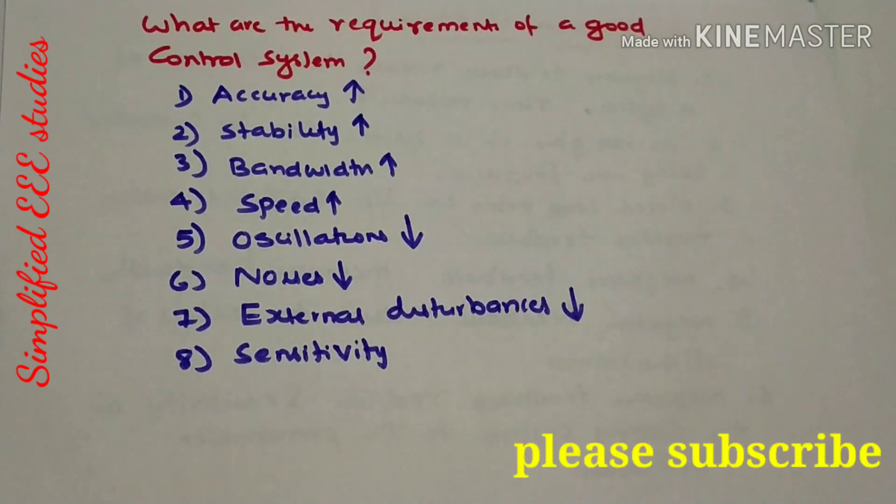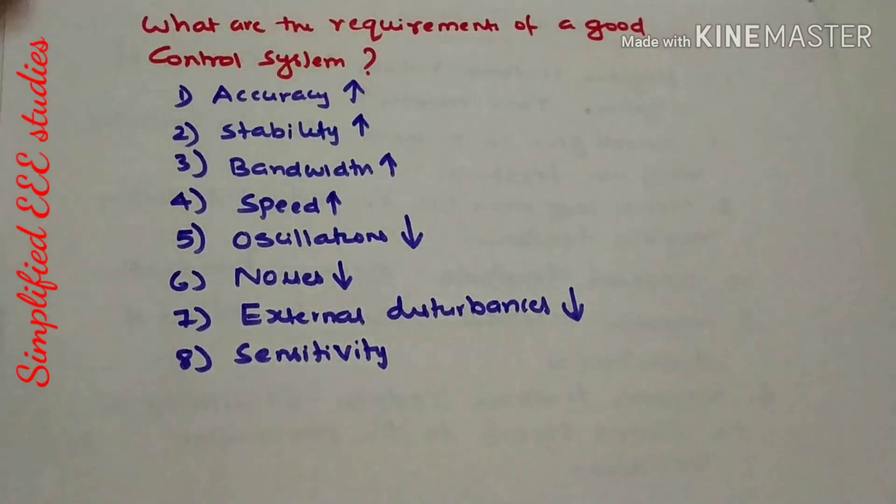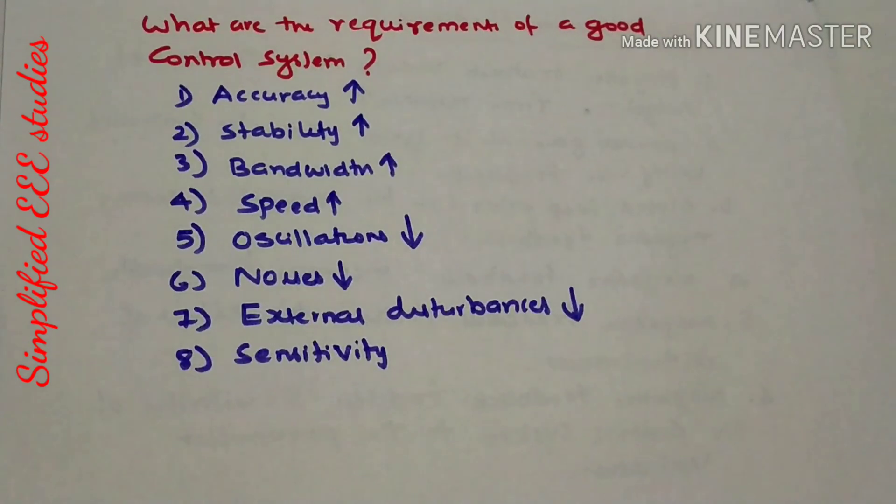So these are the valuable points before selecting a control system, or you can say what are the requirements of a good control system. These are the possible answers, these are the possible points which need to be taken into consideration.